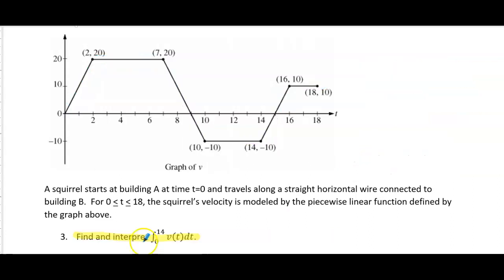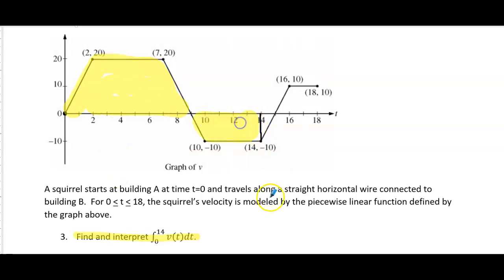Number three: find and interpret the integral of velocity from zero to fourteen. Integrating velocity gives the area under the curve, so we want the area from zero to fourteen. We'll find the area of two trapezoids. Using the trapezoid formula — base one plus base two times half the height — the first trapezoid has bases of five and nine with a height of twenty, giving area 140.